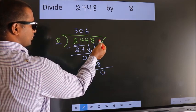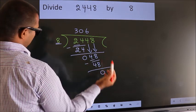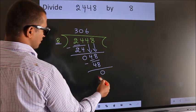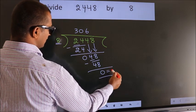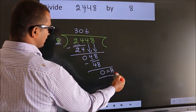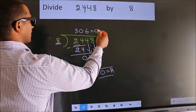There are no more numbers to bring down, so we stop here. This is our remainder, and this is our quotient.